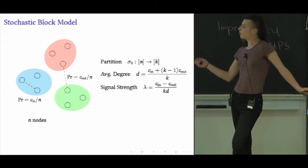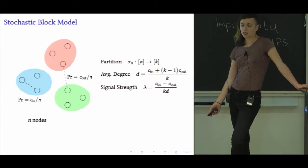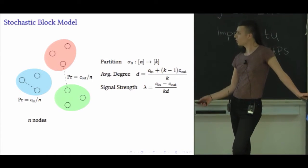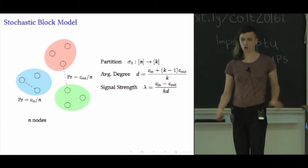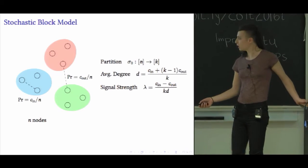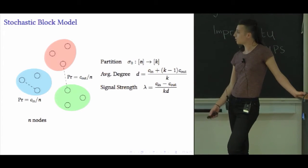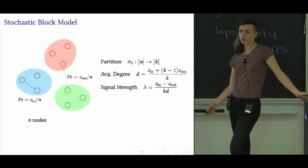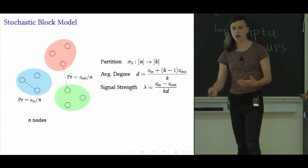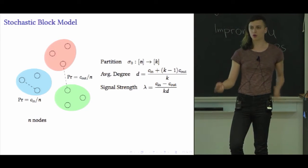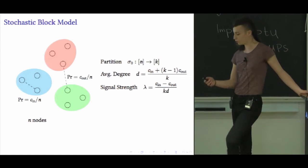Let me point out that when lambda equals zero, when C_in equals C_out, this model reduces to the Erdős-Rényi model, so there's no community structure. On the other hand, when lambda is large, either positive or negative, this means that either C_in or C_out is much greater than the other. So the edges are actually carrying information about the relative types of the endpoints.